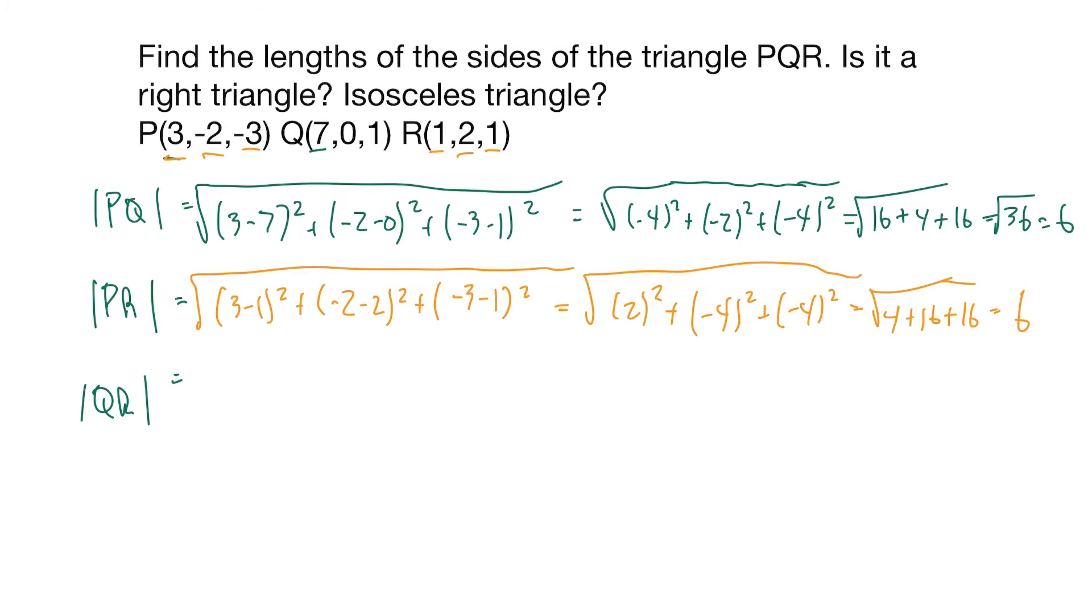And then for Q and R, let's get a different color. Take 7 minus 1 squared plus 0 minus 2. So you got 6 squared plus negative 2 squared plus 0. That's going to give us 6 squared, which is 36, plus 4 plus 0.